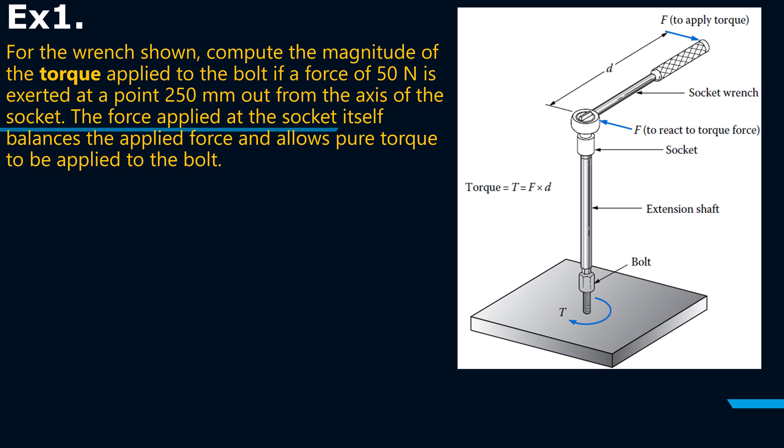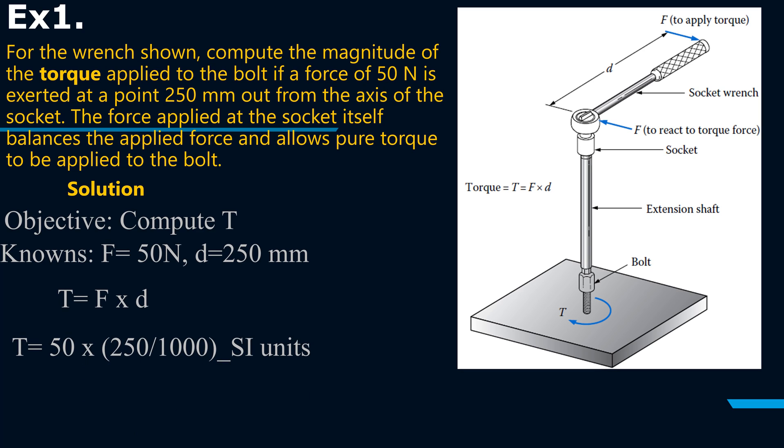The force applied at the socket itself balances the applied force and allows pure torque to be applied to the bolt. So the solution: objective is to compute the torque T. The knowns: the applied force is 50 Newton and the distance from the center of the axis to the point of application is 250 millimeters. We know that torque is force times distance, so T equals 50 times 250 over 1000. It's important to always work with SI units to avoid confusion, and so you find your answer to be 12.5 Newton meter.